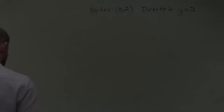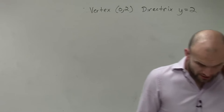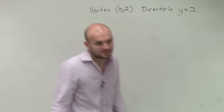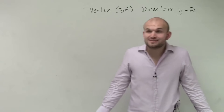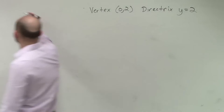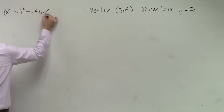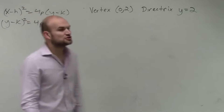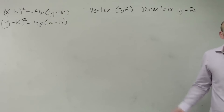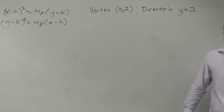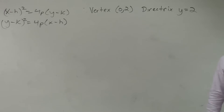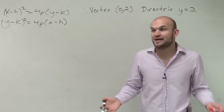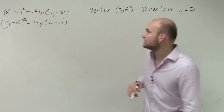There are two standard form equations: (x − h)² = 4p(y − k) for vertical parabolas, and (y − k)² = 4p(x − h) for horizontal ones. To know which to use, just plot the information given. When x is squared, the parabola opens up or down; when y is squared, it opens left or right. Let's graph what we have: vertex at (0, 4) and directrix at y = 2.